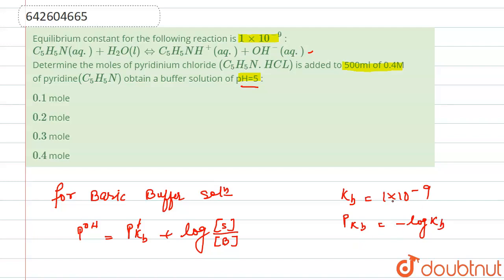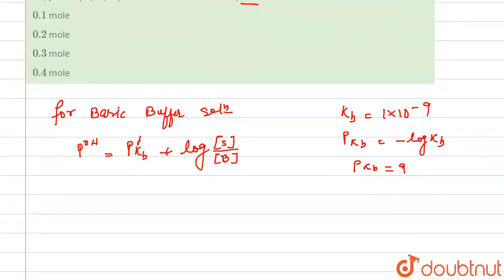Now we have the value of pKb. We have a relation that pOH + pH equals 14.